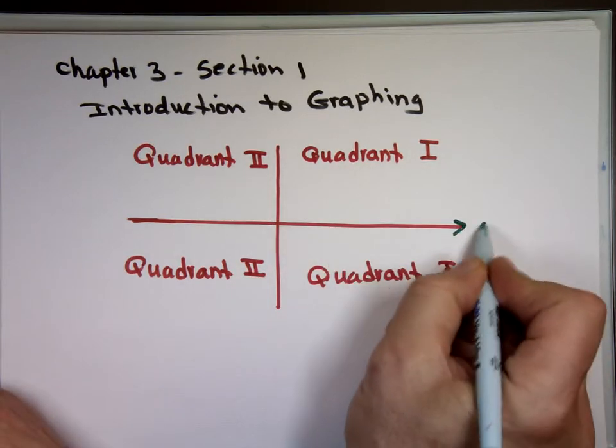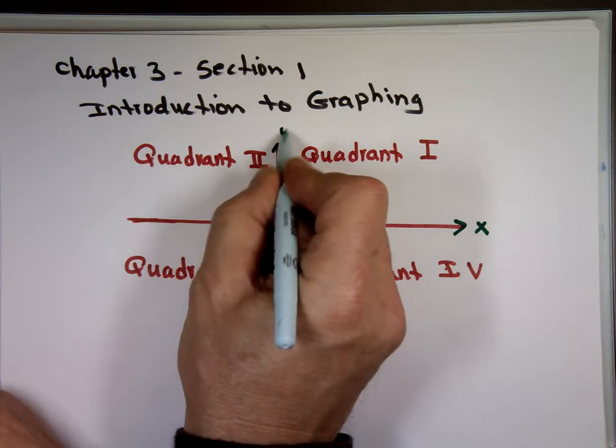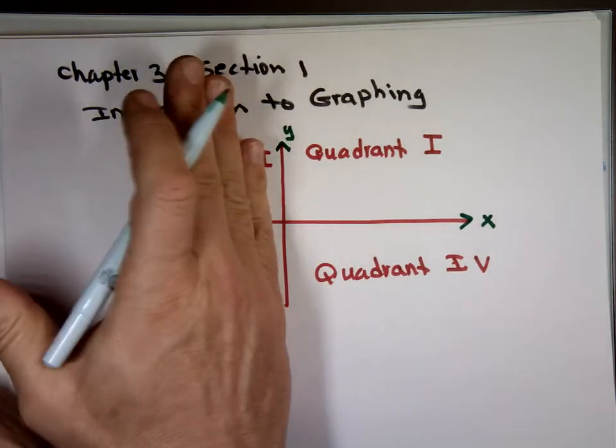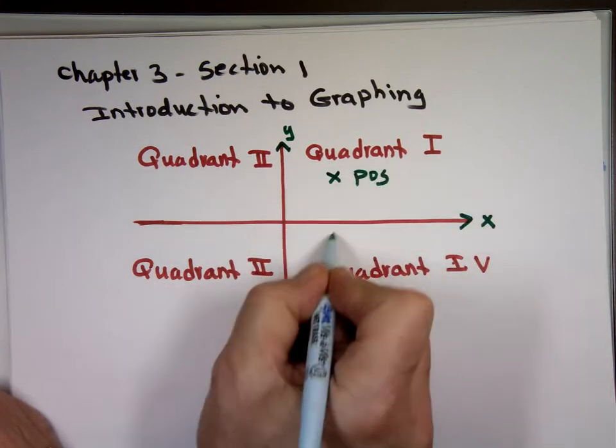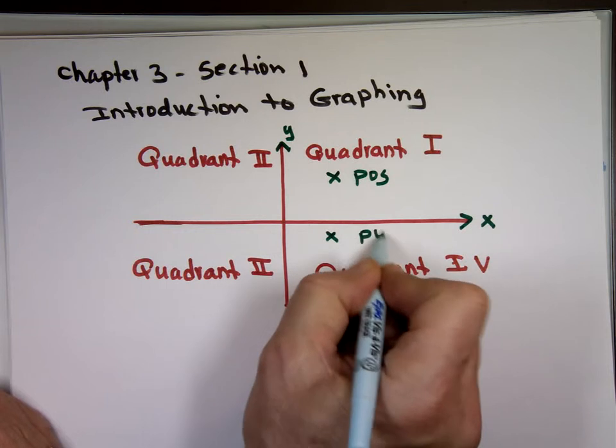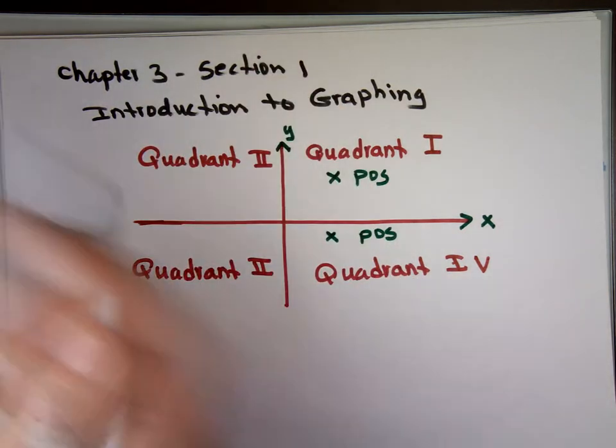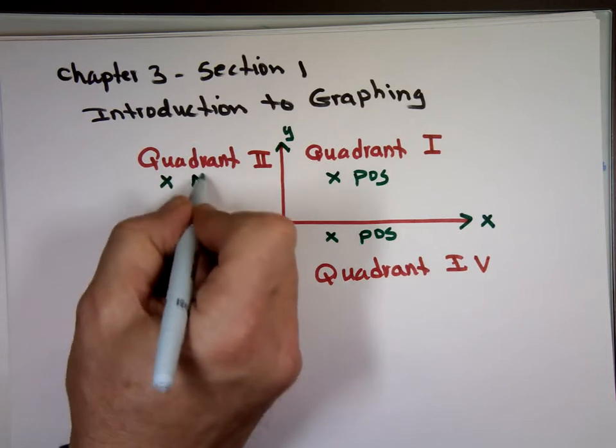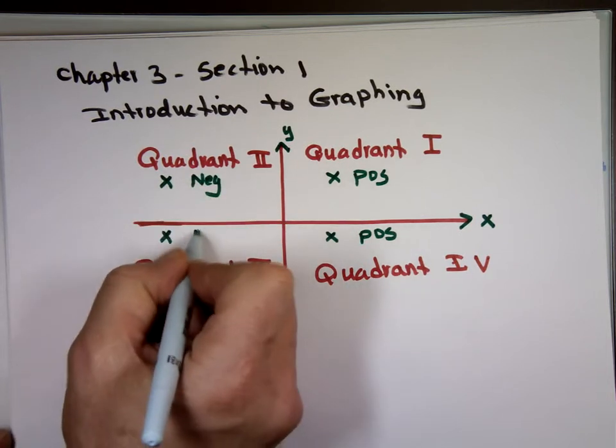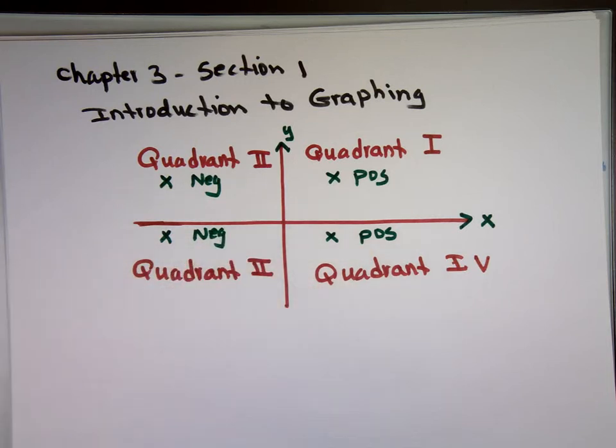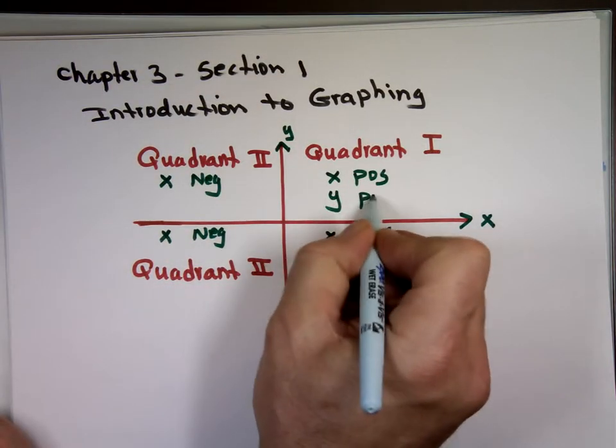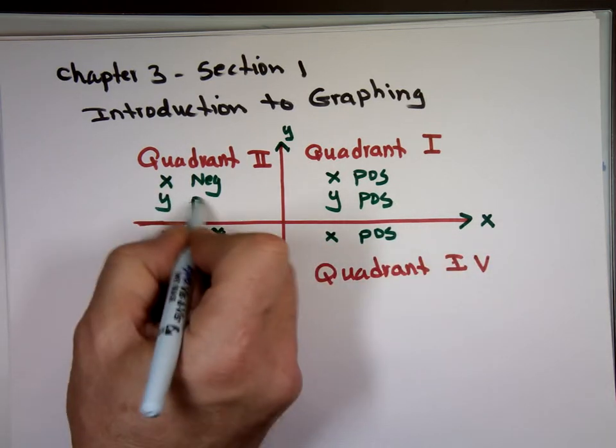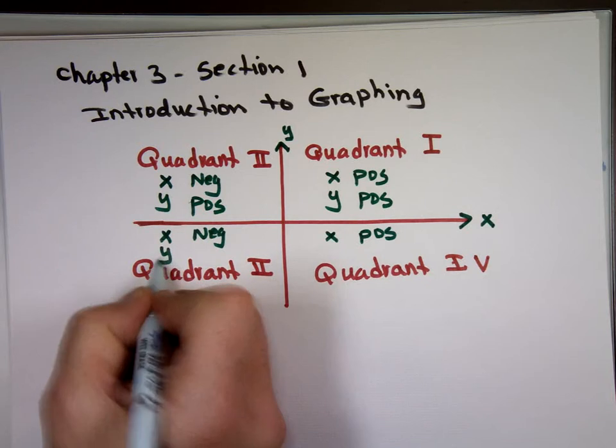This is the x-axis and this is the y-axis. To the right of the y-axis, x is positive. So x is positive here and x is positive here. To the left of the y-axis, x is negative. What about the y-axis? Above the x-axis, y is positive. And this is y is positive. Down here, y is negative below that.